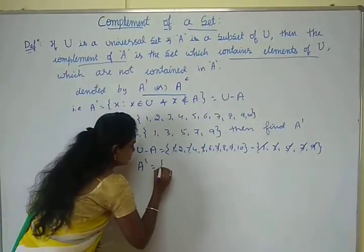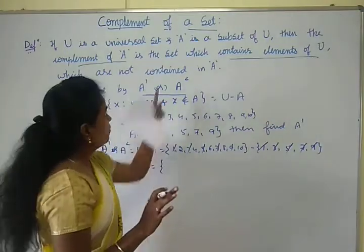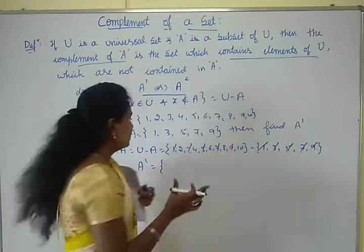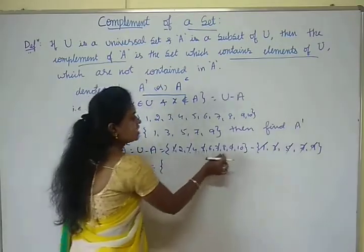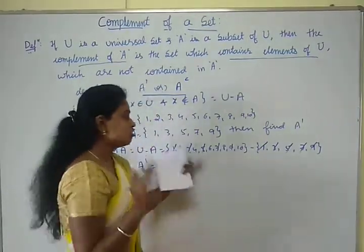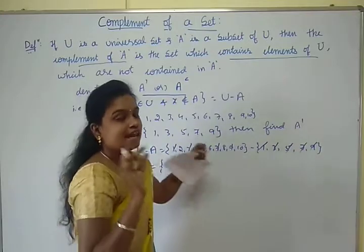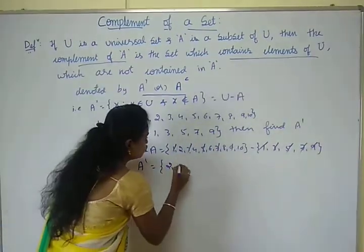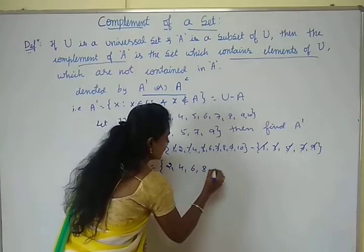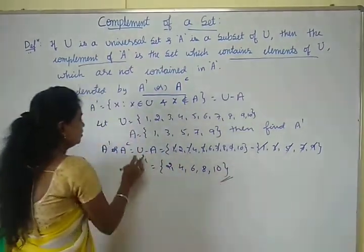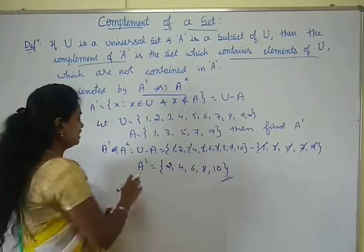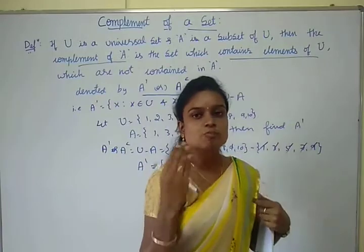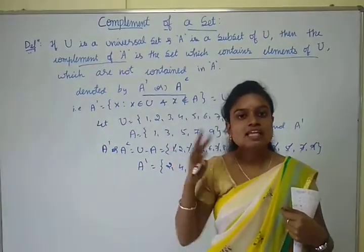A dash means A complement — the elements which are in U but not in A. The elements 1, 3, 5, 7, 9 are also contained in A. The elements which are not present in A are 2, 4, 6, 8, and 10. So this is the complement of the set A.